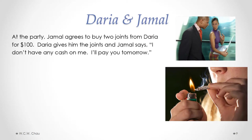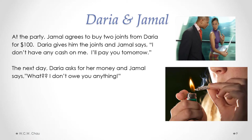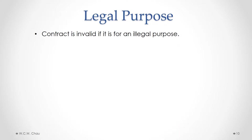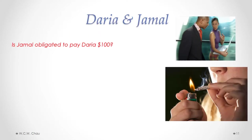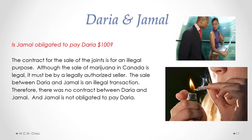At that same party, Jamal agrees to buy two joints from Daria for a hundred dollars. Daria gives him the joints and Jamal says: 'I don't have any cash on me, I'll pay you tomorrow.' The next day Daria asks for her money and Jamal says: 'I don't owe you a single thing.' Is Jamal obligated to pay Daria the $100? Another requirement for a binding contract is a legal purpose — a contract is invalid if it is for an illegal purpose. The contract for the sale of the joints is for an illegal purpose. Although the sale of marijuana in Canada is now legal, it must be a sale by a legally authorized seller. The sale between Daria and Jamal is an illegal transaction, therefore there was no contract and Jamal is not obligated to pay.